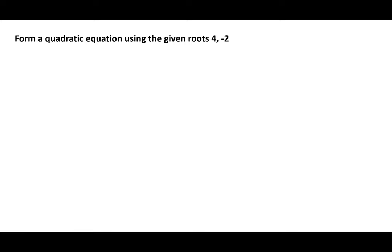There are two ways in which we can form a quadratic equation. We've looked at method 1, now we will look at method 2. In method 2, we use the following formula: a quadratic equation is given by x squared minus the sum of the roots times x plus the product of the roots.